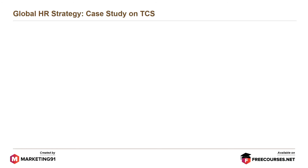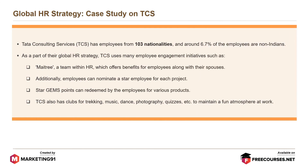Let's understand global HR strategy with the help of a case study on Tata Consulting Services, or TCS. TCS has employees from 103 nationalities and around 6.7% of the employees are non-Indians. As part of their global HR strategy, TCS uses many employee engagement initiatives such as Maitri — a team within HR which offers benefits for employees along with their spouses. Additionally, employees can nominate a star employee for each project, and star gems points can be redeemed by employees for various products. TCS also has clubs for trekking, music, dance, photography, quizzes, etc., to maintain a fun atmosphere at work.